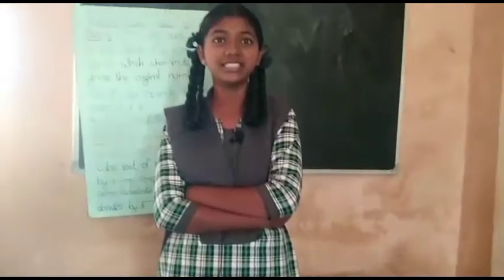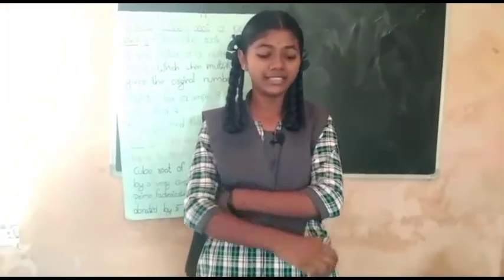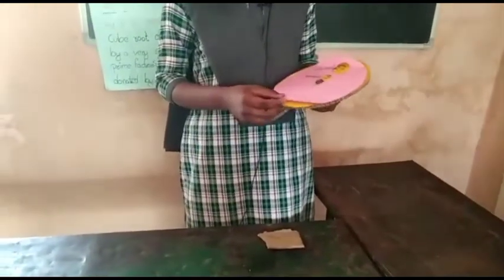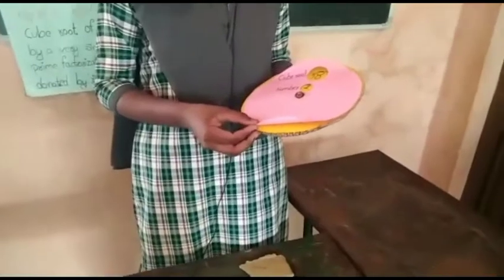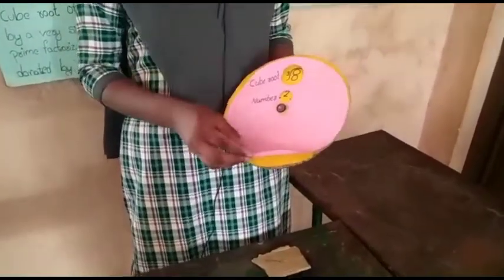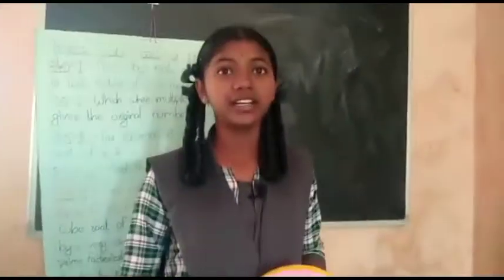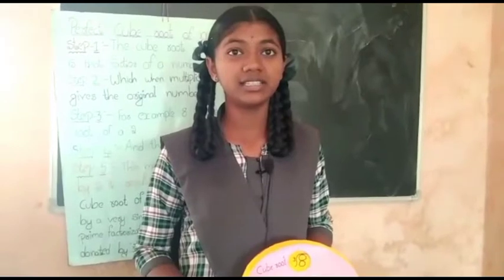The cube root of a number is a factor of that number which, when multiplied three times by itself, gives the original number. For example, 2 is the cube root of 8, expressed as cube root of 8 is equal to 2. This means 2 multiplied three times results in 8. The cube root of a number can be found by a very simple method, which is the prime factorization method.